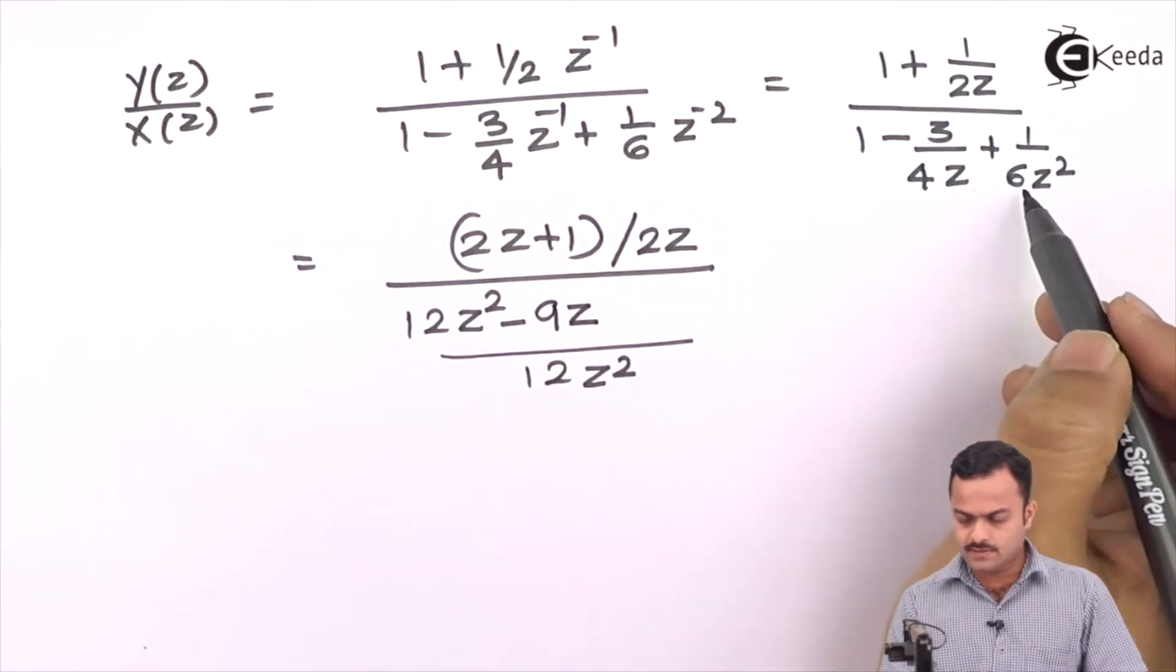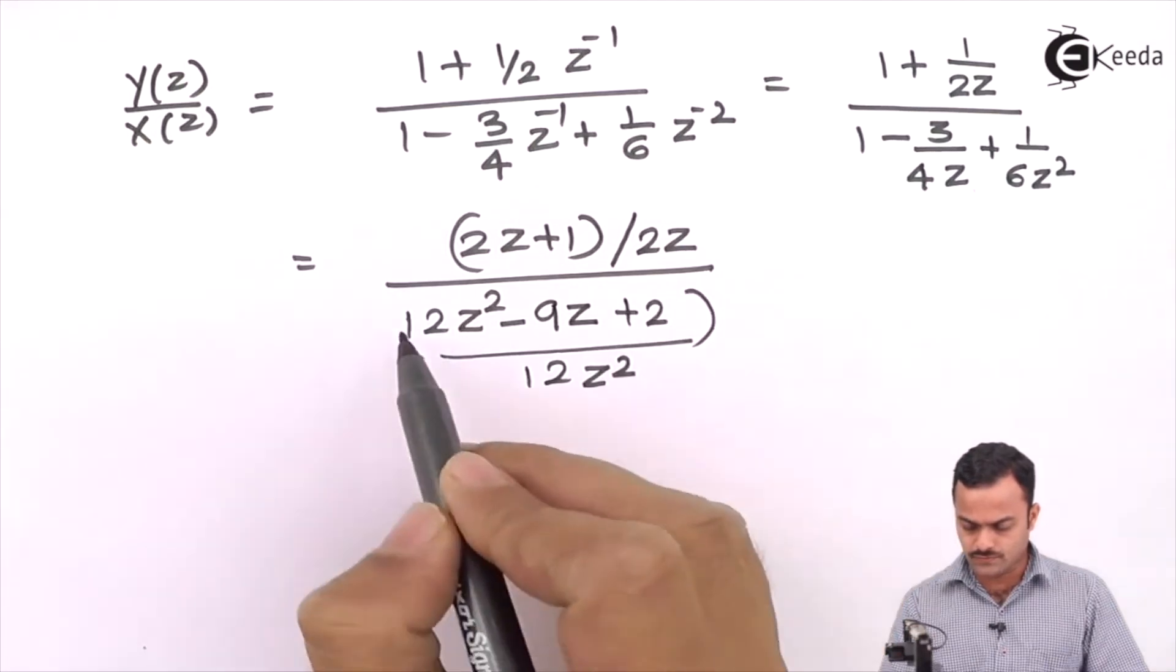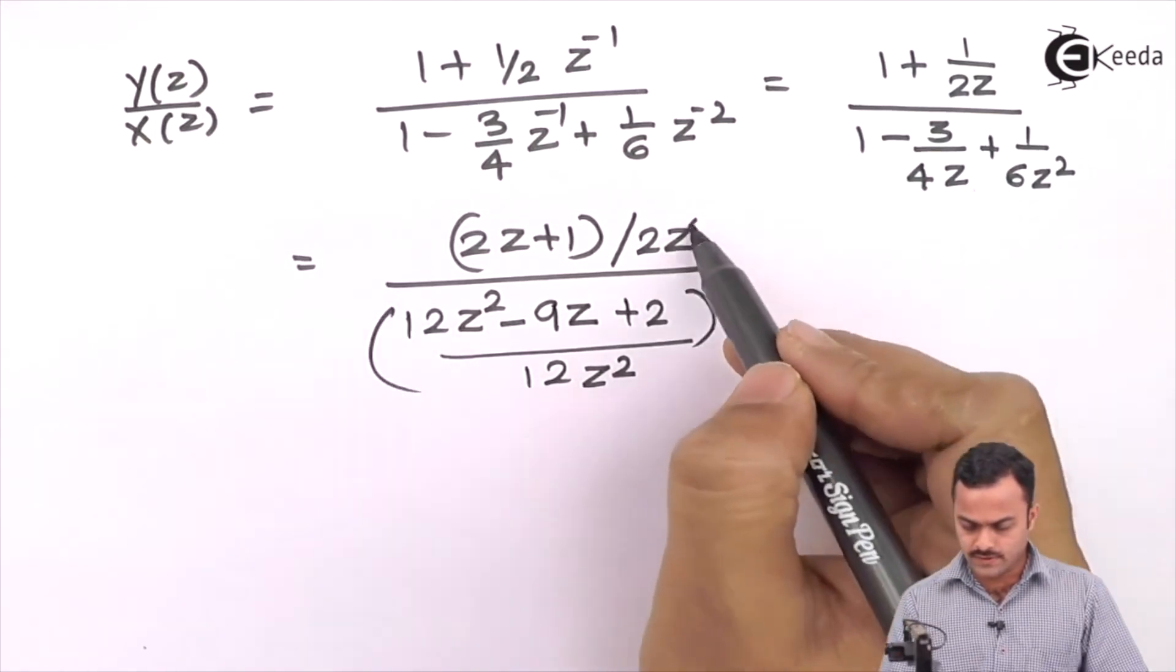Here I need to multiply with 2, so +2. I can cancel one z over here.